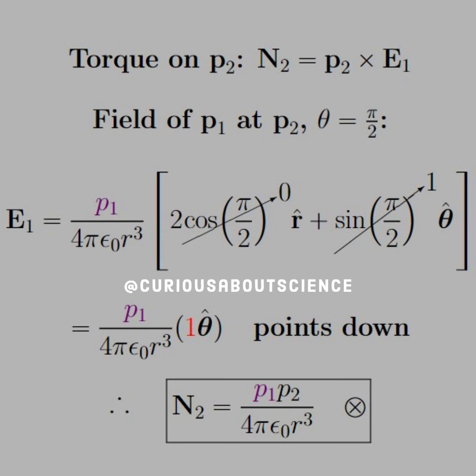Similarly, for the torque on P2, we note that N2 equals P2 cross E1 since the electric field from dipole 1 is the external field to dipole 2. This happens at an angle of theta equal pi over 2.